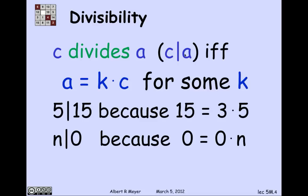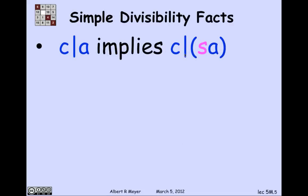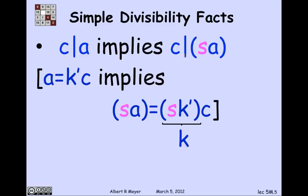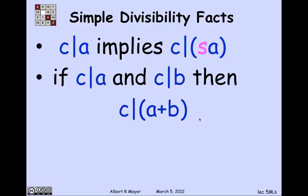0 is a multiple of every number. Another trivial fact from the definition: if C divides A, then C divides any constant times A. If C divides A, that means A equals K-prime times C for some K-prime. Multiplying both sides by S gives SA equals SK-prime times C. Parenthesizing SK-prime as K, we find that SA is a multiple of C. So if C divides A, then C divides a constant S times A.